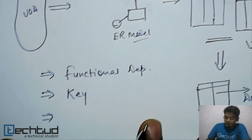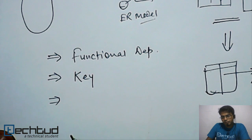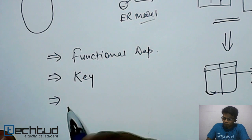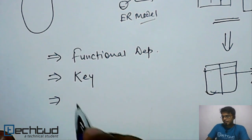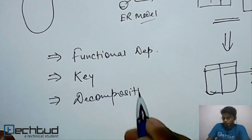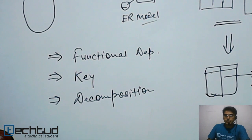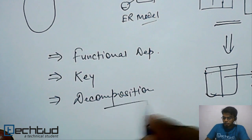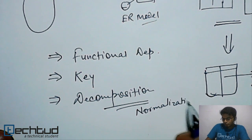And lastly, we will try to reduce the redundancy. We cannot remove it completely - redundancy is something which will always be there in our database system. We will try to reduce the redundancy with the help of decomposition, which is basically called normalization.